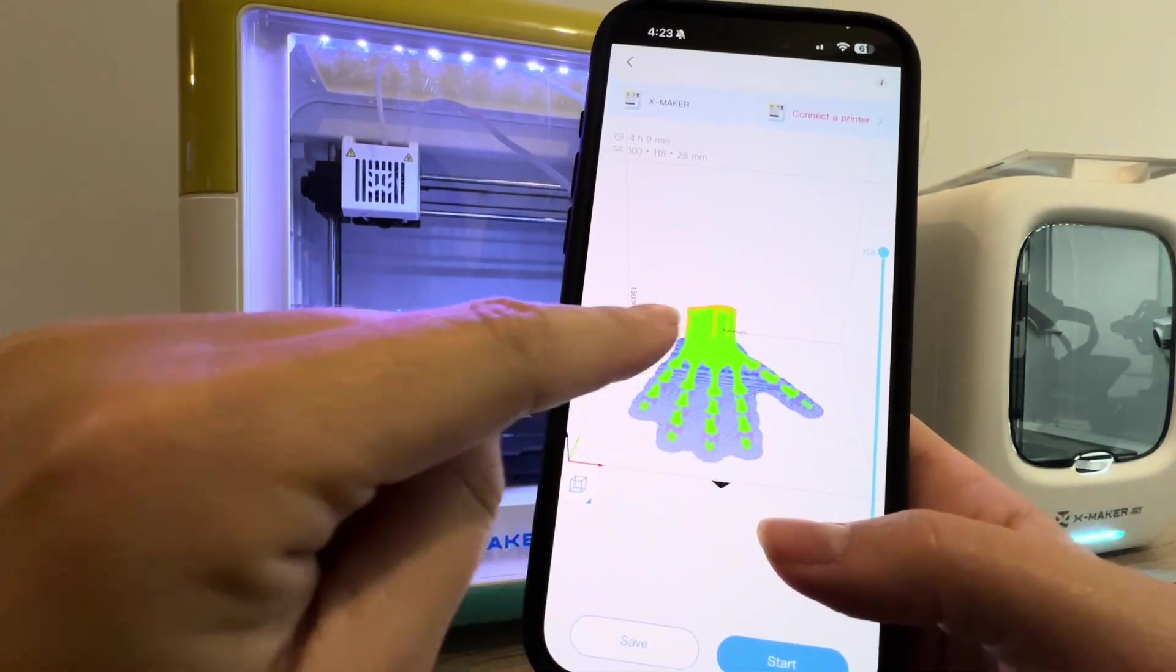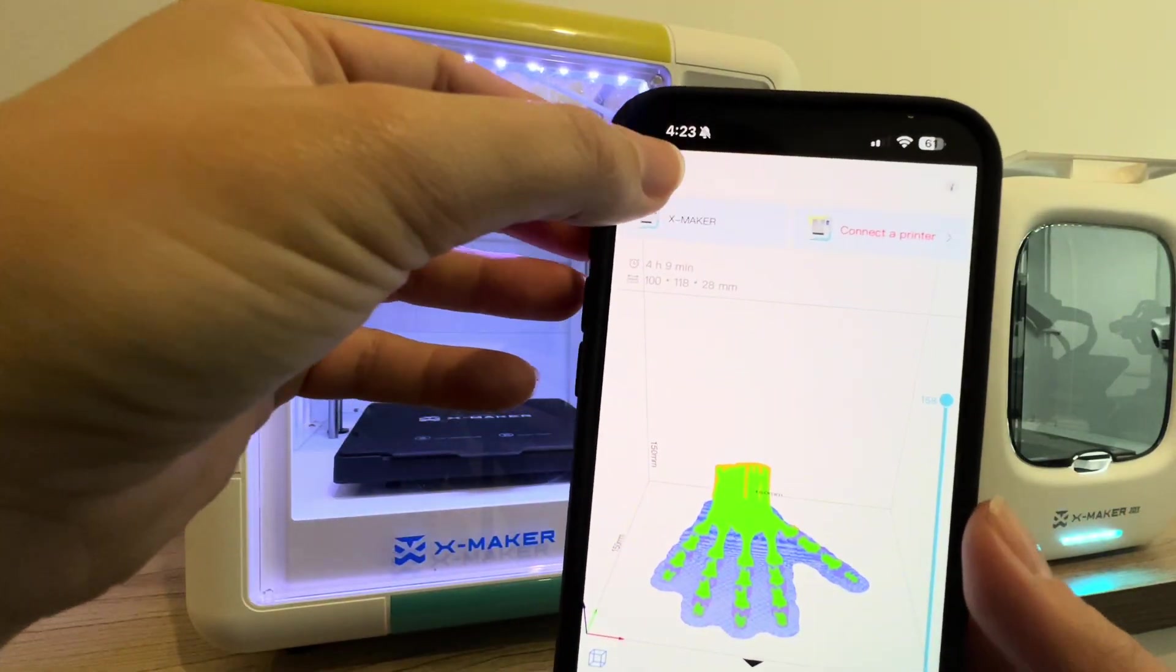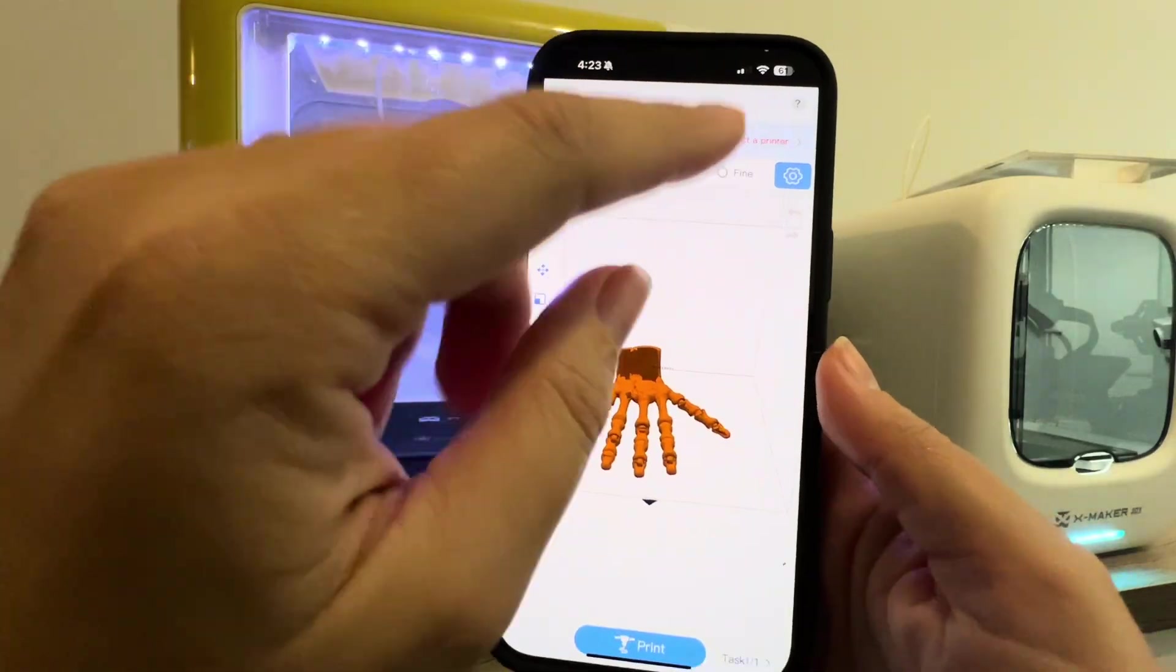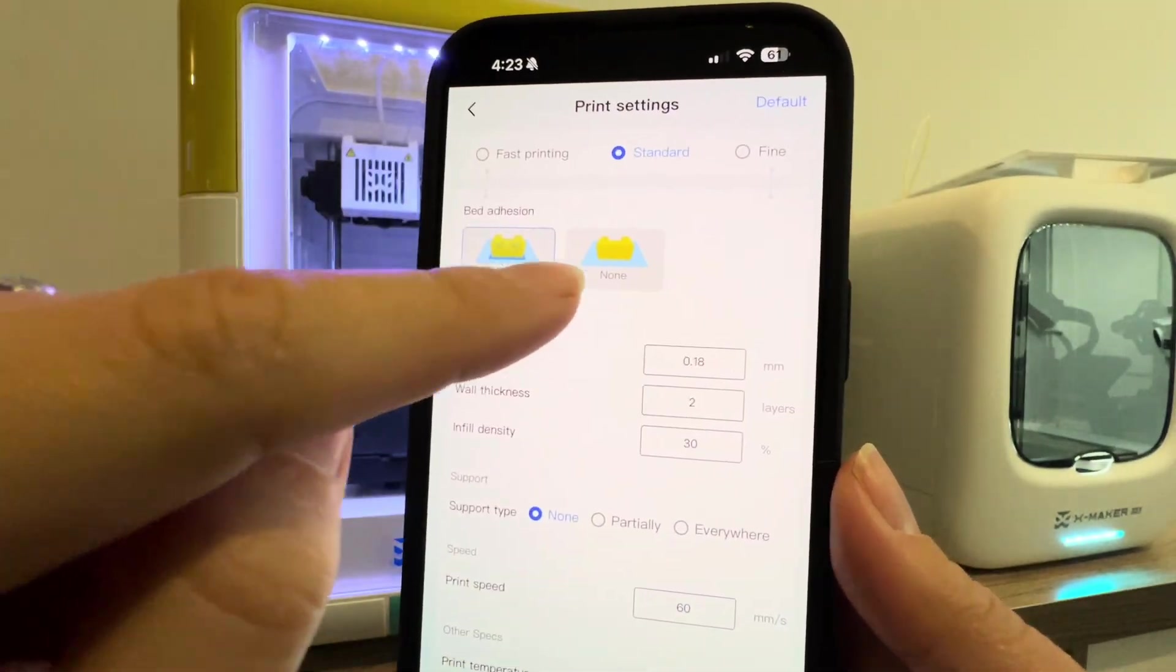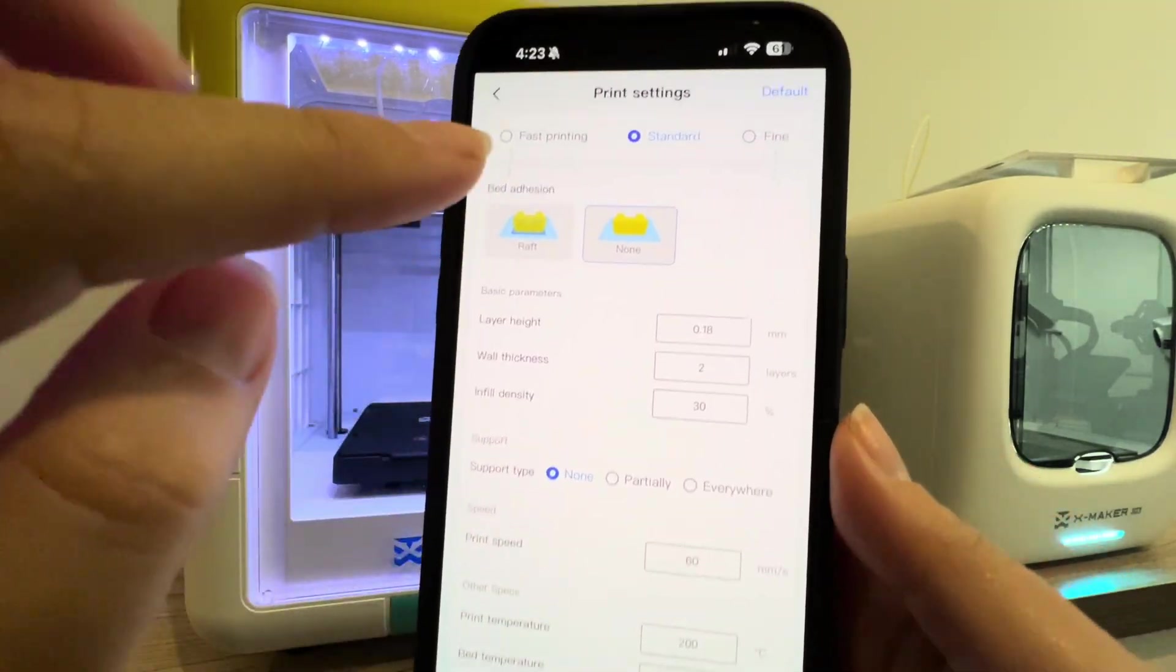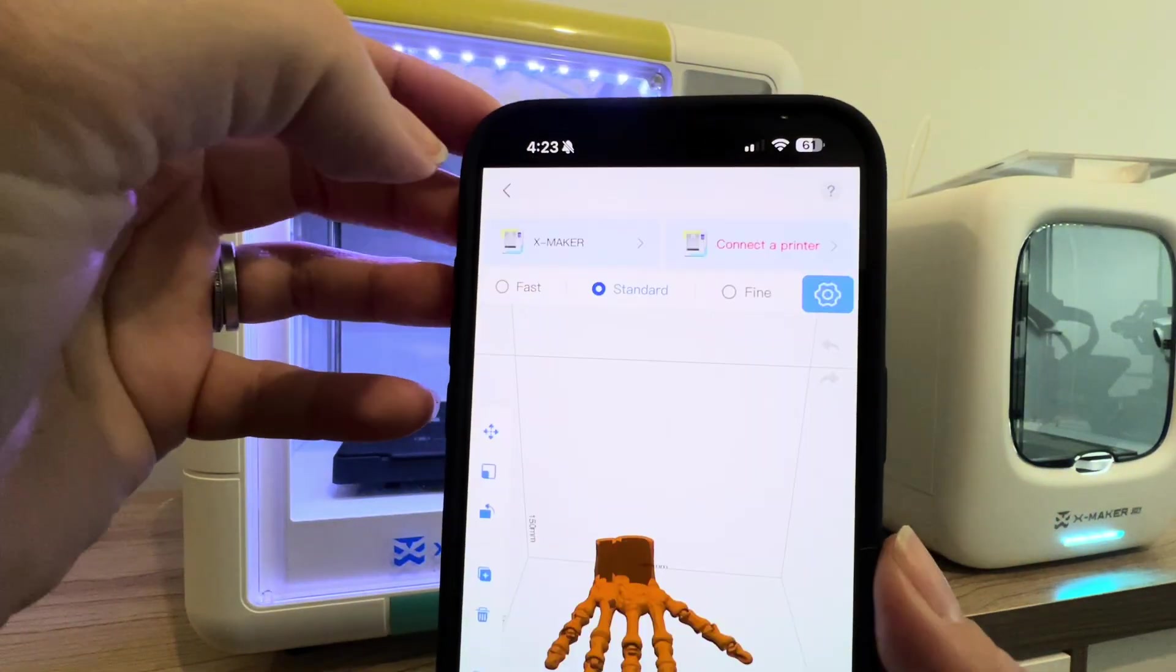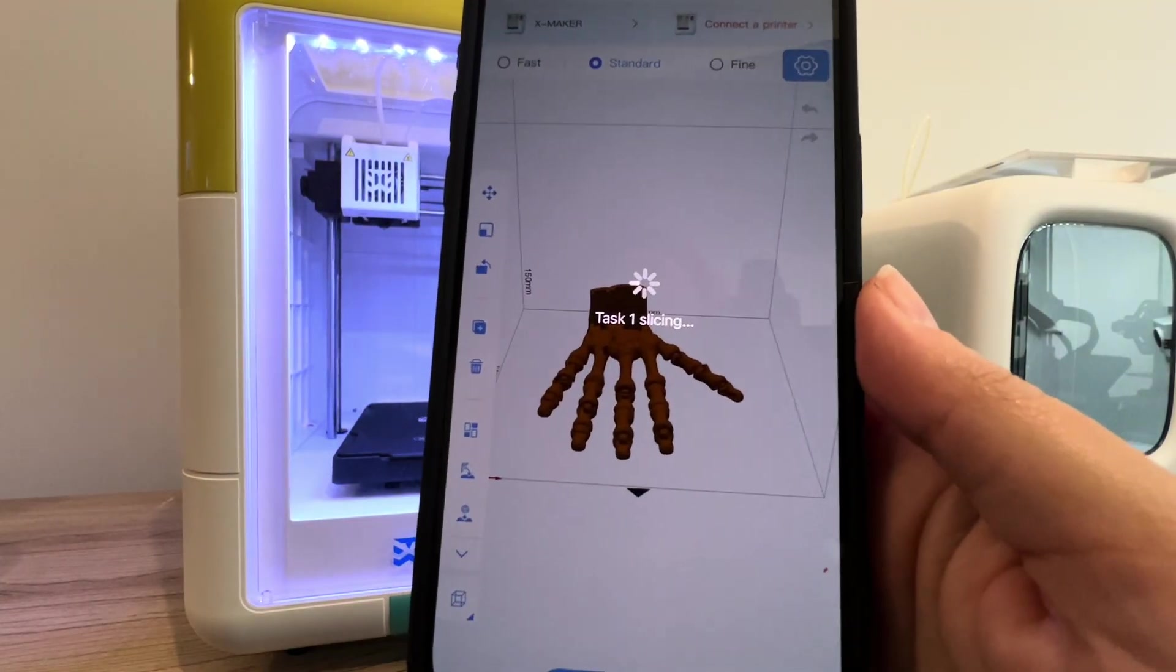One thing I noticed here is you see that blue layer on the bottom is a raft that helps with bed adhesion, but I really don't like a raft on my prints, especially when it's an articulated print like this. I'm going to click the settings there and then put none for bed adhesion, no raft. I'll go back and then click print again and it's going to slice my print again.